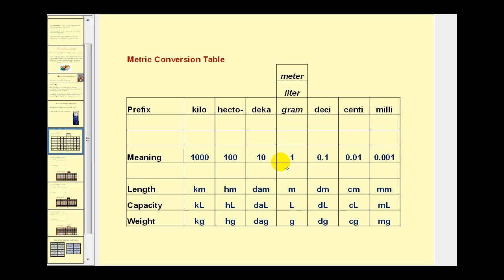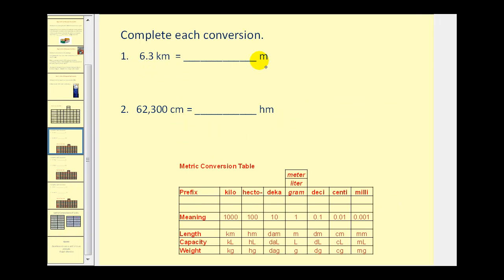Let's look at some specific examples. To convert 6.3 kilometers to meters, we identify both columns in the table. We're going from a larger unit to a smaller unit, moving three columns to the right, so we multiply by ten to the power of three, or move the decimal point three places to the right. Starting with 6.3 and moving the decimal three places right, we need to add two zeros, giving us 6,300. So 6.3 kilometers equals 6,300 meters.